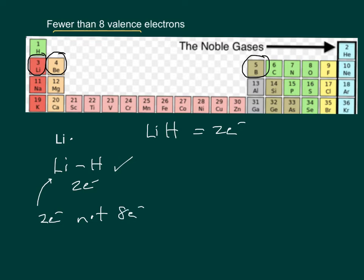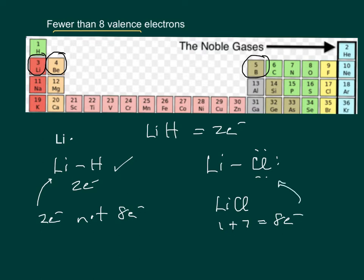Lithium will also form things like LiCl. LiCl has 1 plus 7, which is 8 valence electrons total. But lithium only has 2, so it's not following the octet rule.